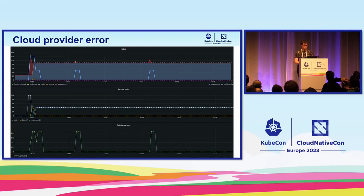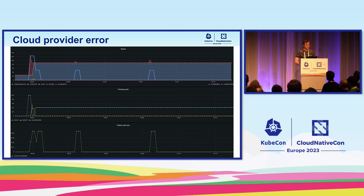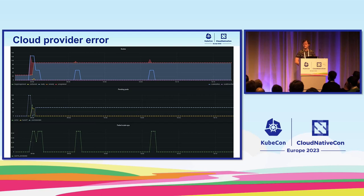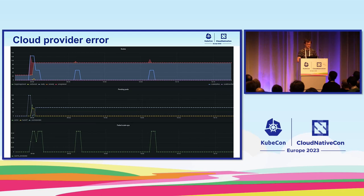Let me quickly move on to using those metrics and events to debug some common issues. The first is any sort of cloud provider error. Cluster Autoscaler notices pending pods and tries to scale up, but nothing happens — it's just repeatedly trying and failing. If we look at the failed scale-up graph, we can see those scale-ups are indeed failing. In this example, I ran out of CPU quota in my project — so I can see what the quota is and already know it's a quota exhaustion issue, and can then go to logs to confirm.